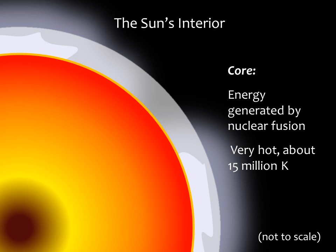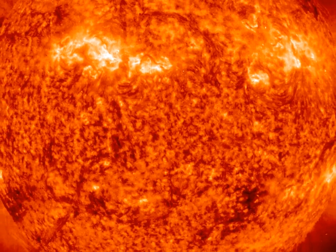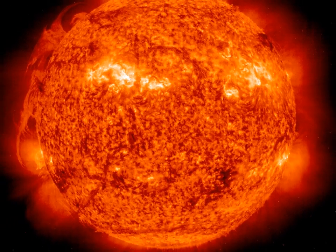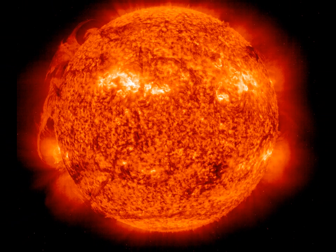The innermost part of the sun is the core — the source of the sun's energy. In the core, nuclear fusion transforms hydrogen into helium. It is very hot and very dense. We'll discuss the details of what's happening within the solar core in the next lecture. That's all for now — take care, I'll talk to you again soon.